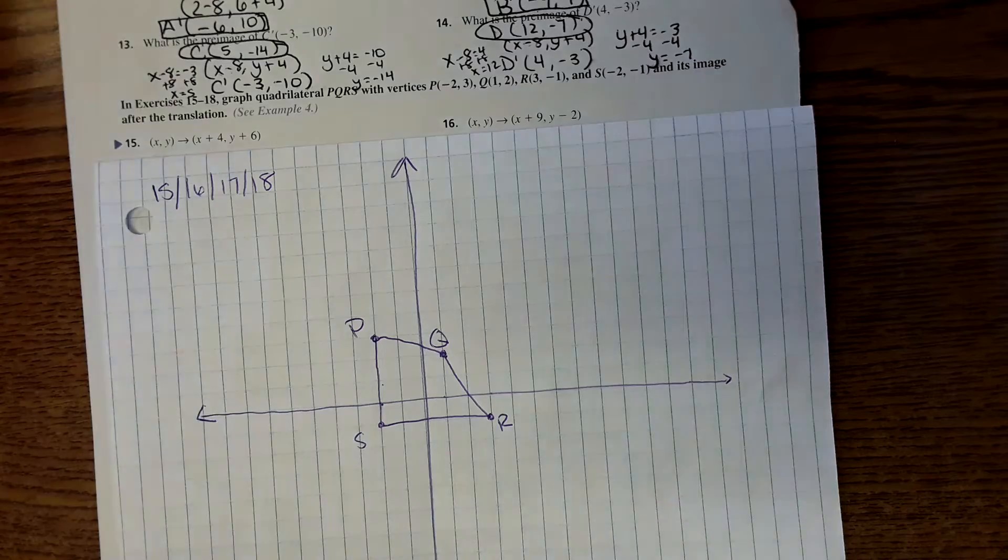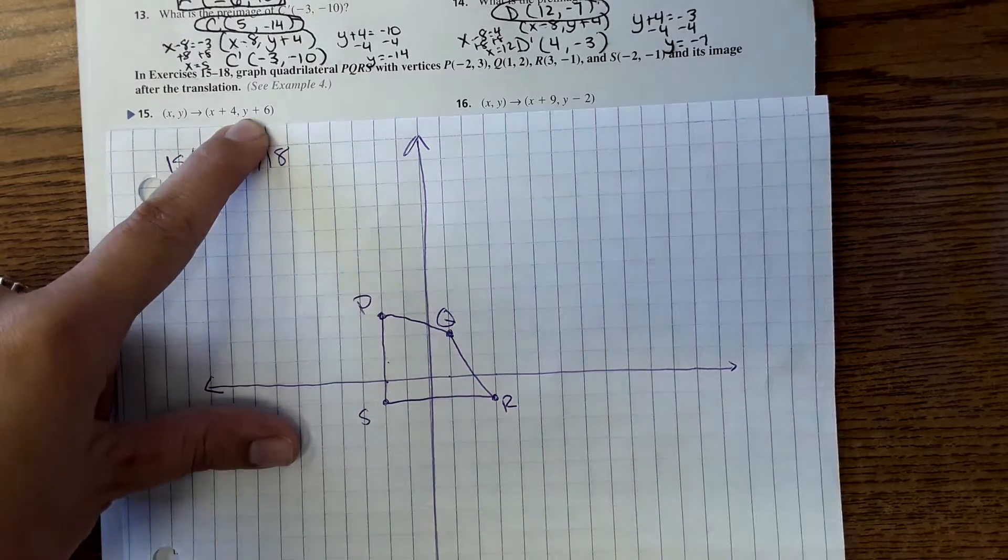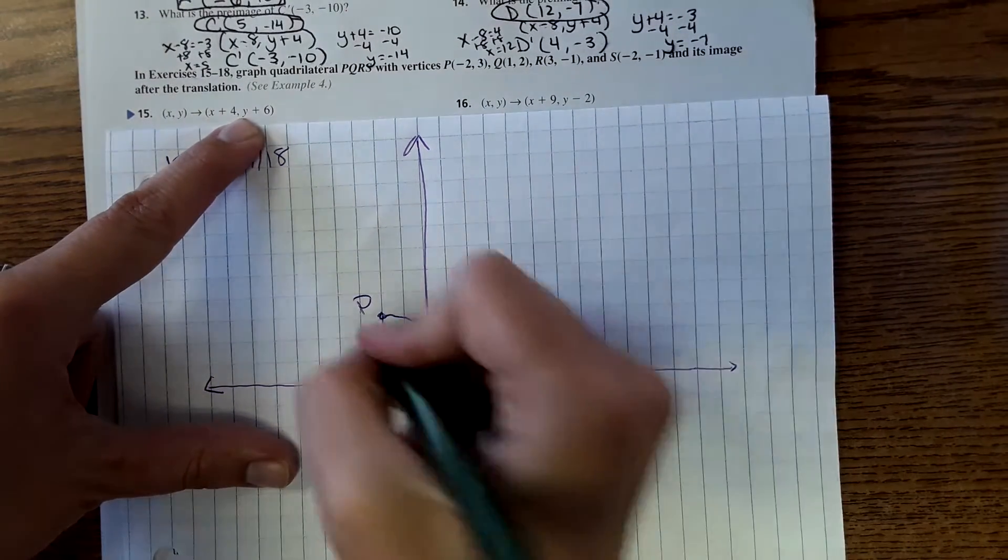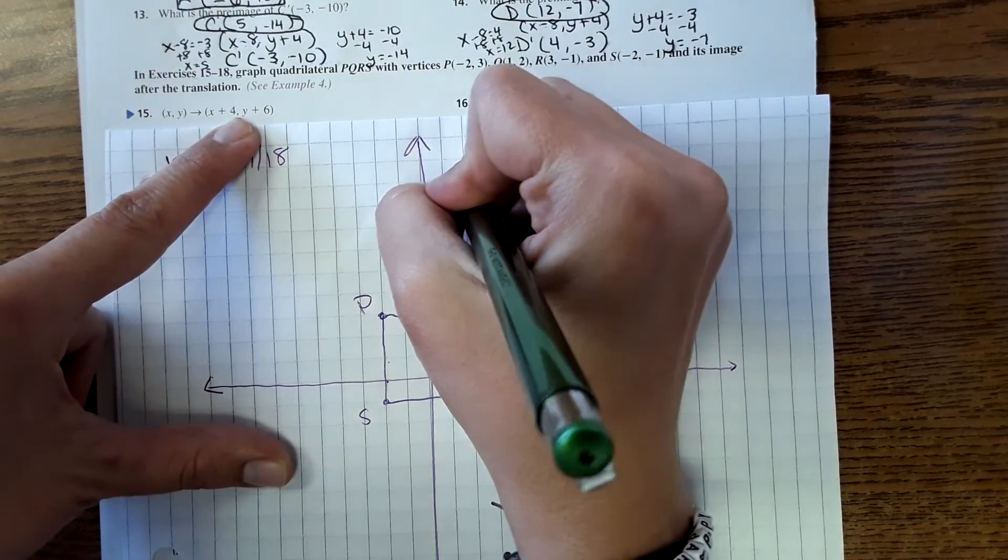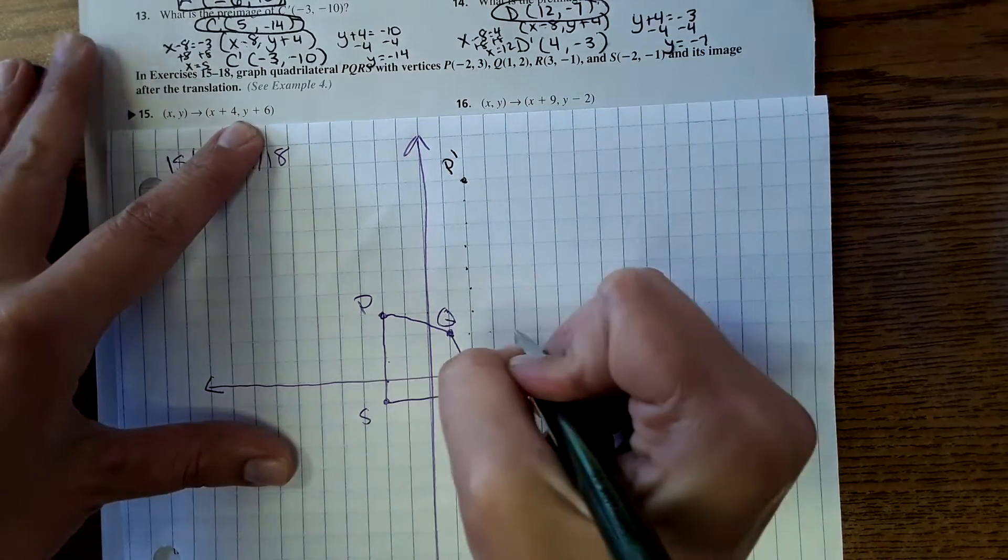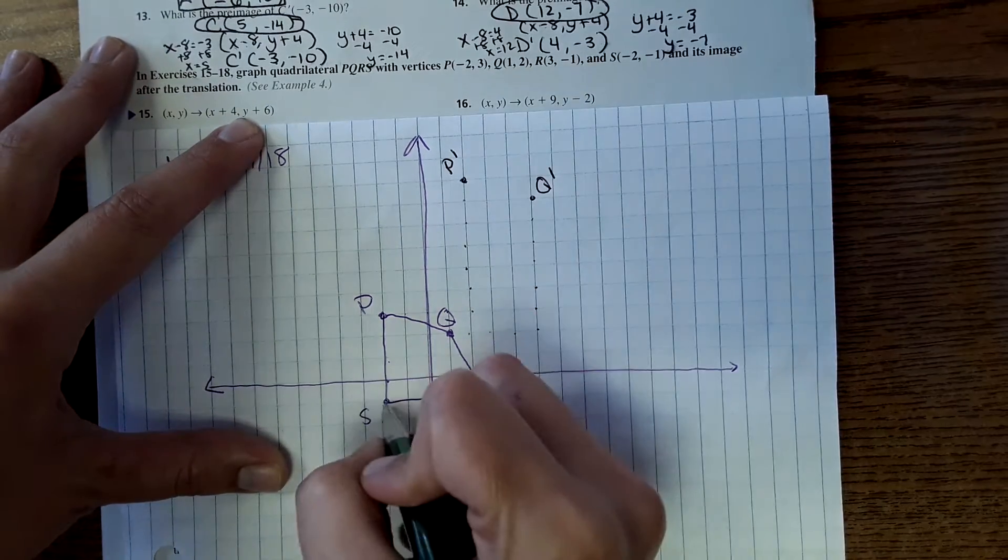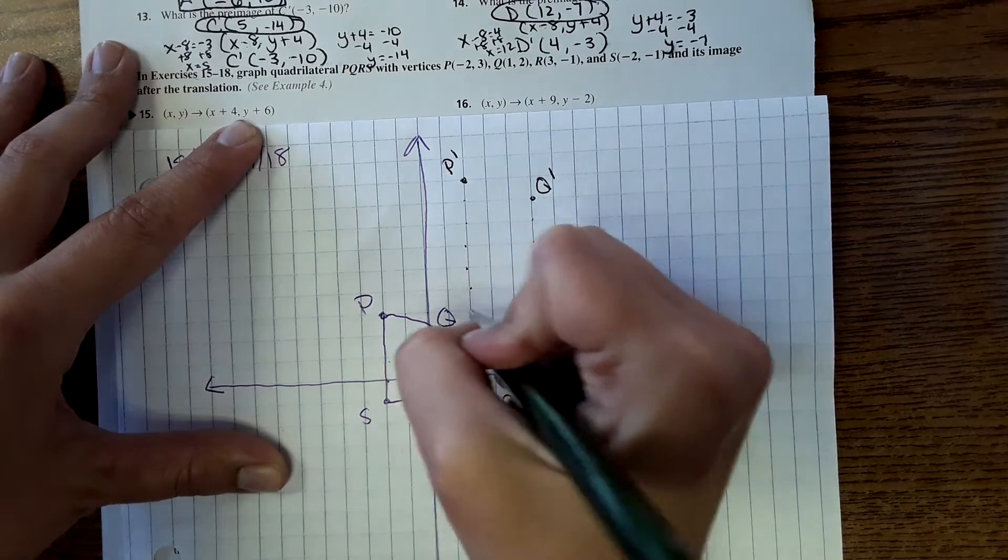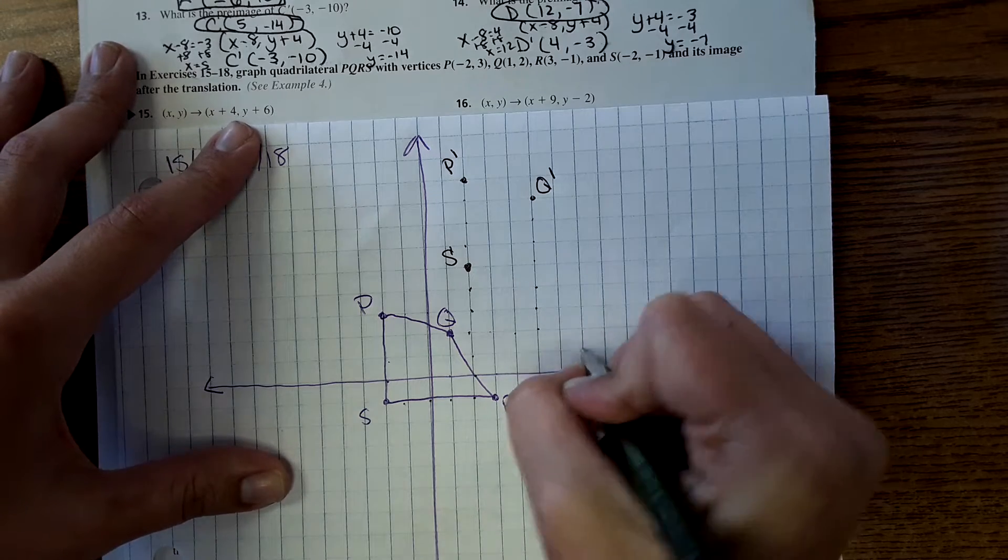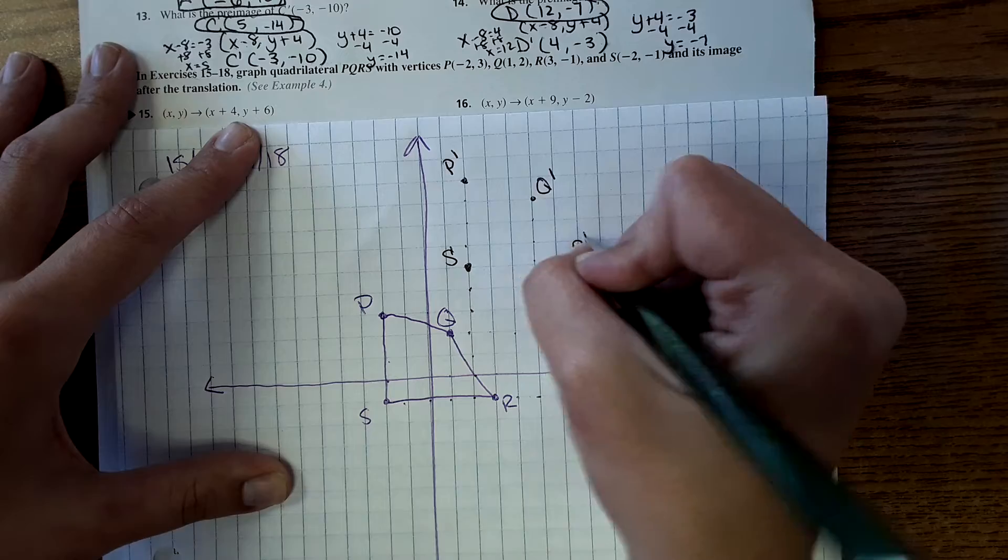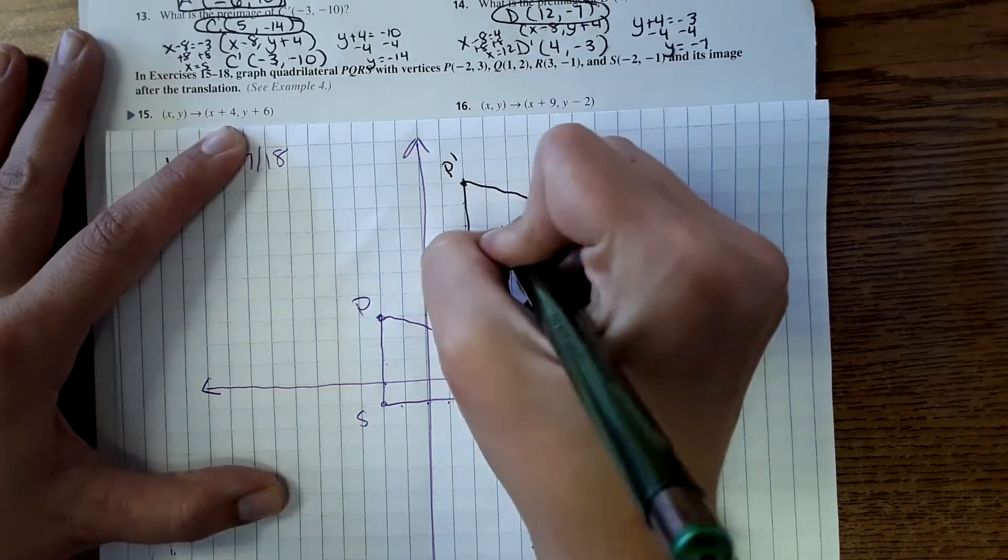And now we have to translate this based on the rules. So I'm going to just take one at a time. Here it's saying X plus 4, Y plus 6. So each point, I'm going to move it over 4 and up 6. And this becomes P prime, Q prime. Okay, so this is number 15.